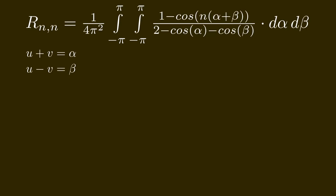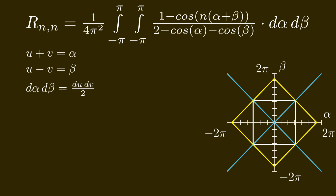Next, we will substitute u+v is alpha, and u-v is beta. This also means that a move in the u direction moves both alpha and beta. This is like tilting the axis by 45 degrees. And since our movement is scaled by the square root of 2 in both directions, we get a factor of 2 here.